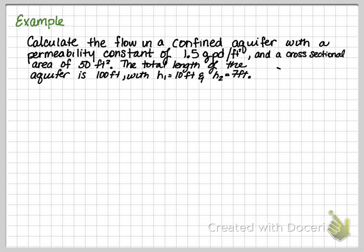In this example, calculate the flow in a confined aquifer with a permeability constant or hydraulic conductivity of 1.5 gallons per day per feet squared and a cross-sectional area of 50 feet squared. The total length of the aquifer is 100 feet. H1 is 10 feet and H2 is 7 feet.